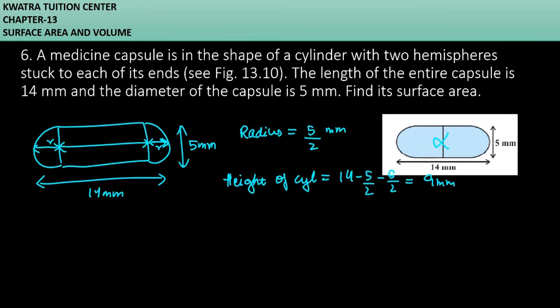Now the surface area of the capsule will be equal to the curved surface area of the cylinder plus the surface area of the hemisphere. Since we have two hemispheres, we multiply by 2.